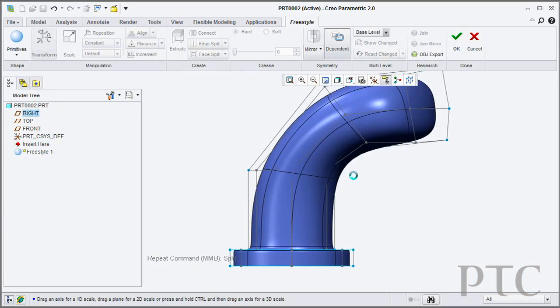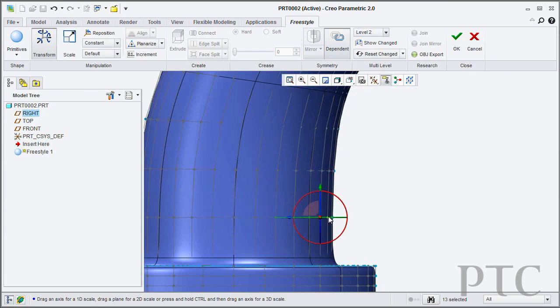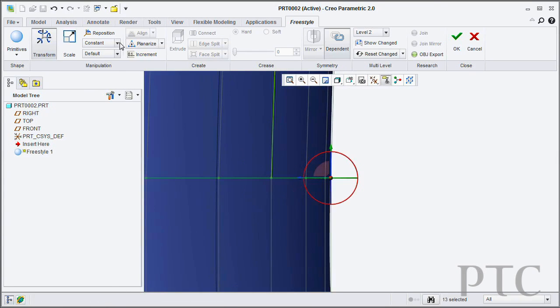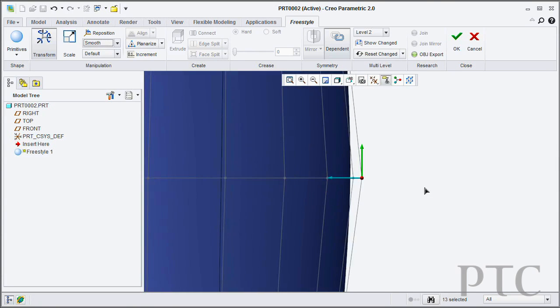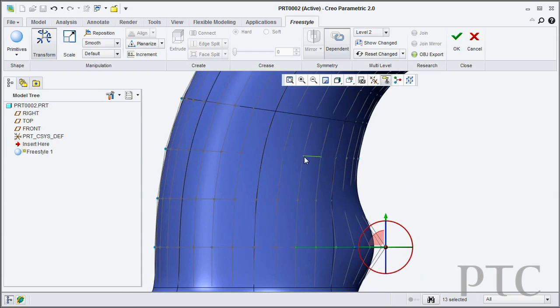In addition, Freestyle also has the ability to perform multi-level subdivision. This allows you to define your initial control mesh, to define your initial shape, but if I want to put in finer and finer detail, I can subdivide that mesh up at a very high level. This will not change the topology of my geometry, but will give me more control on my control mesh to push and pull and adjust the shape.